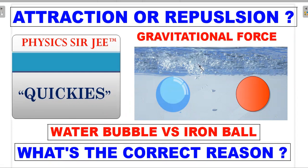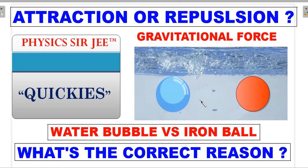The question is about having a large water body in which there is an air bubble and an iron ball kept at a distance r from each other. Their size is the same. Using only gravitational forces — remember, there is no other gravity in the downward direction — so the water body itself is like a planet which is huge. There is no Earth.